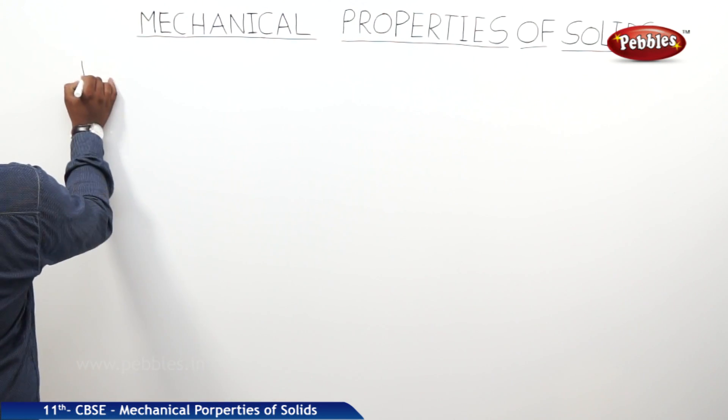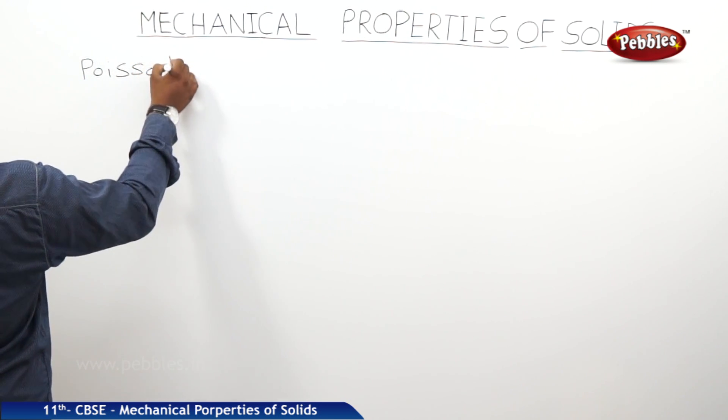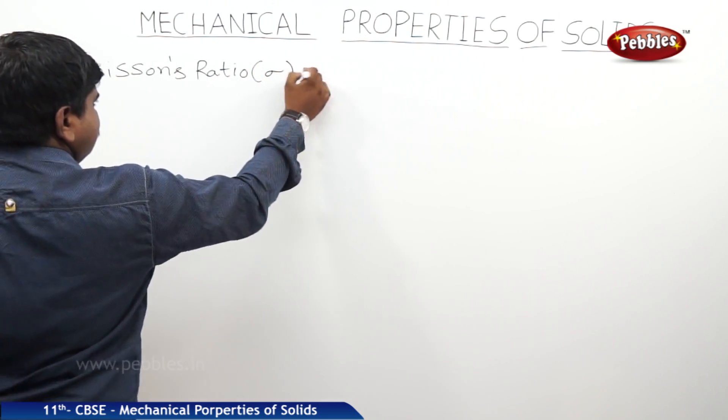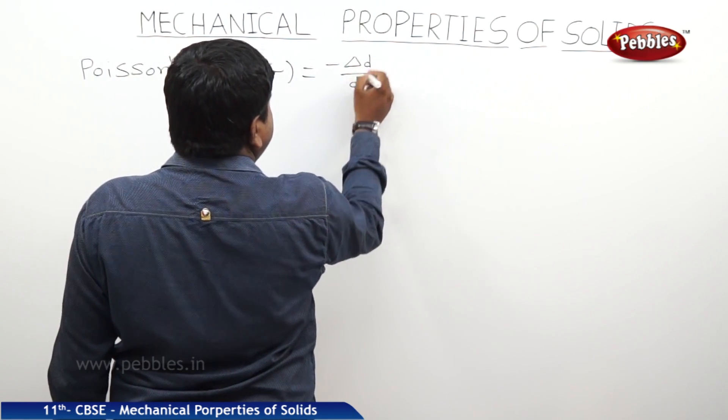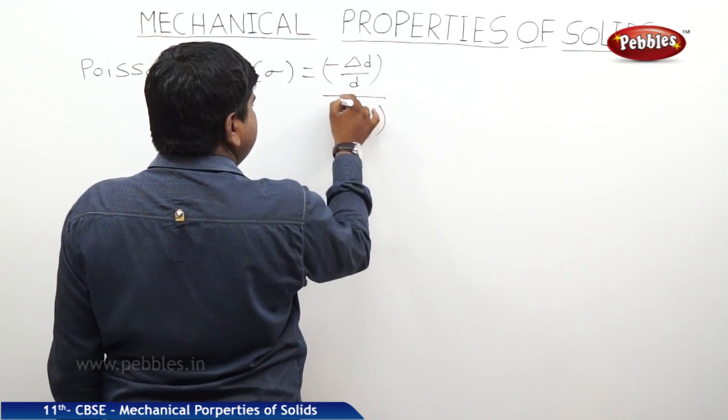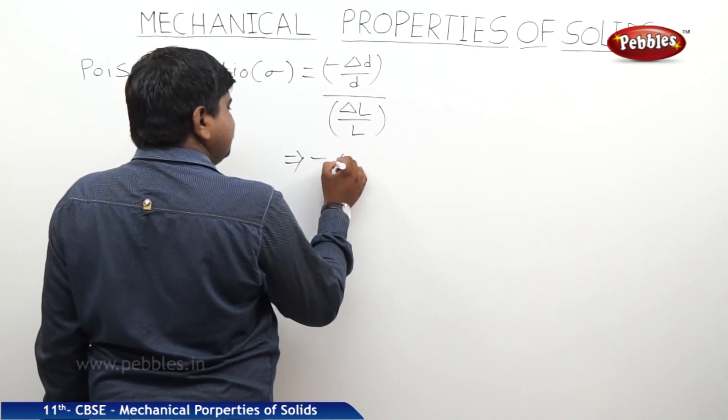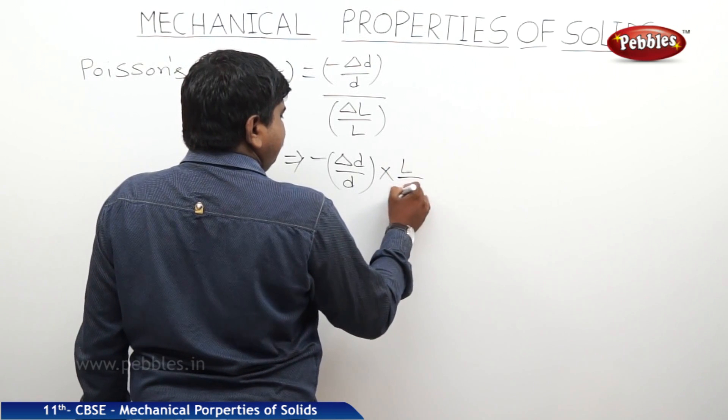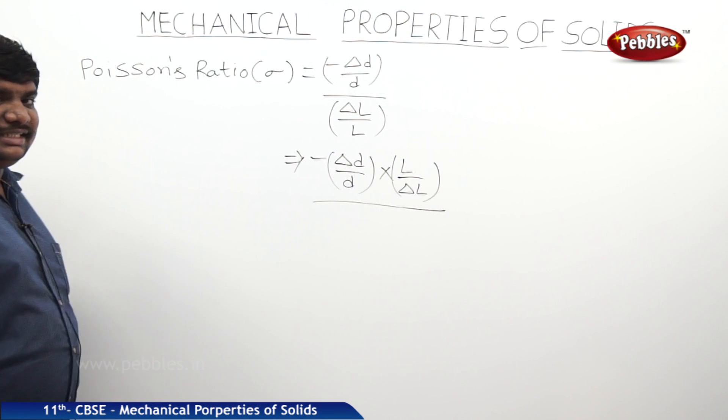Therefore, Poisson's ratio sigma is equal to lateral strain, that means minus delta d by d whole divided by delta l by l. So, it is minus delta d by d into l by delta l. This is the formula to find out the Poisson's ratio.